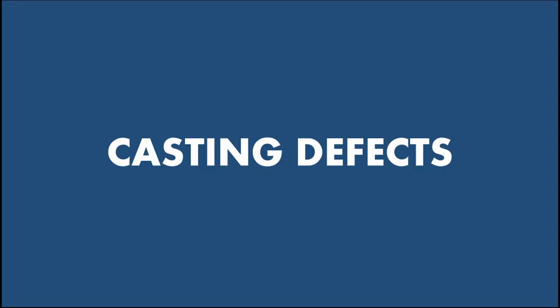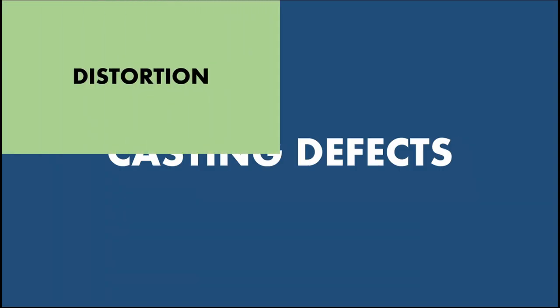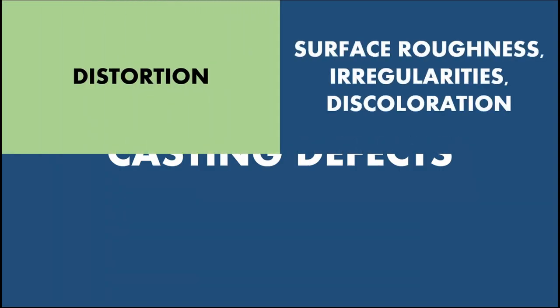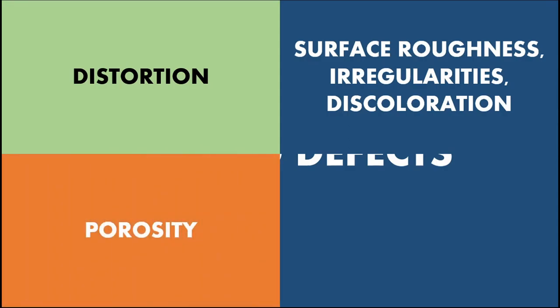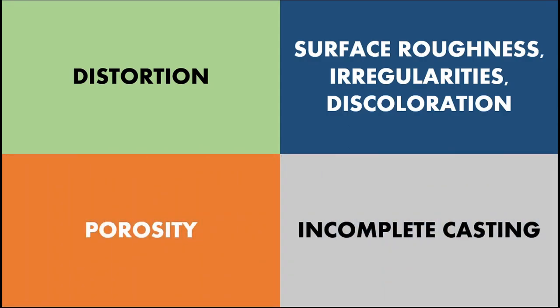Defects in dental casting can be classified under four headings: Distortion, Surface Roughness and Irregularities, Porosity, and Incomplete Casting or Missing Details. Let's see all these four categories one by one in detail.